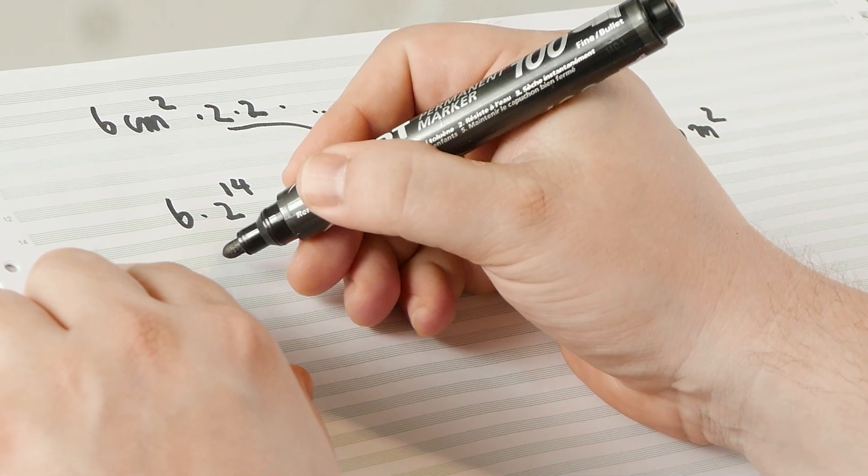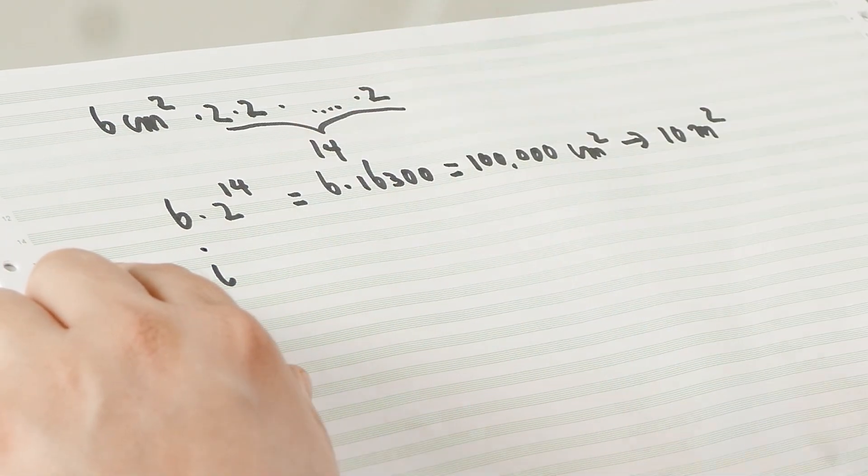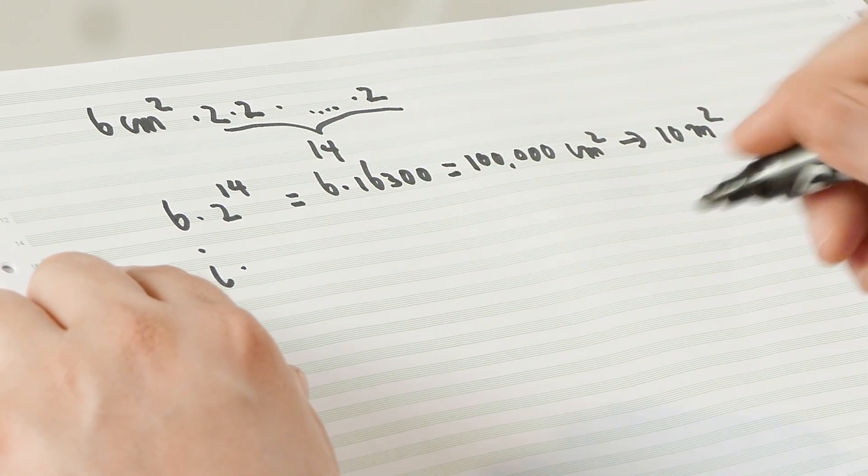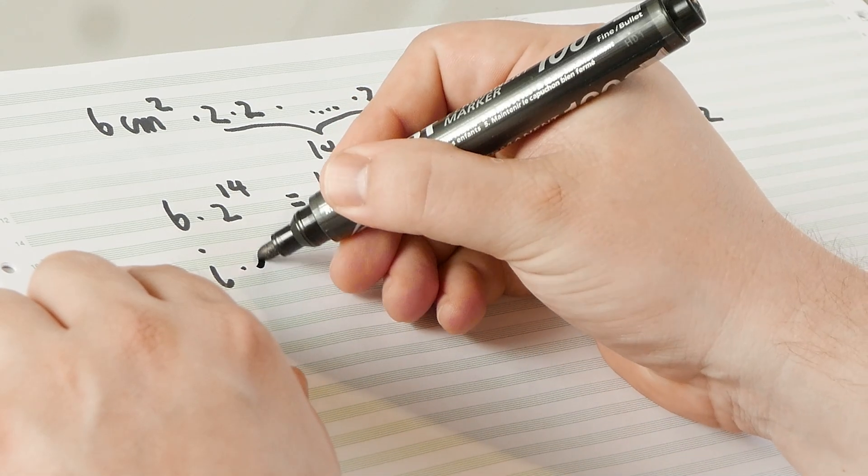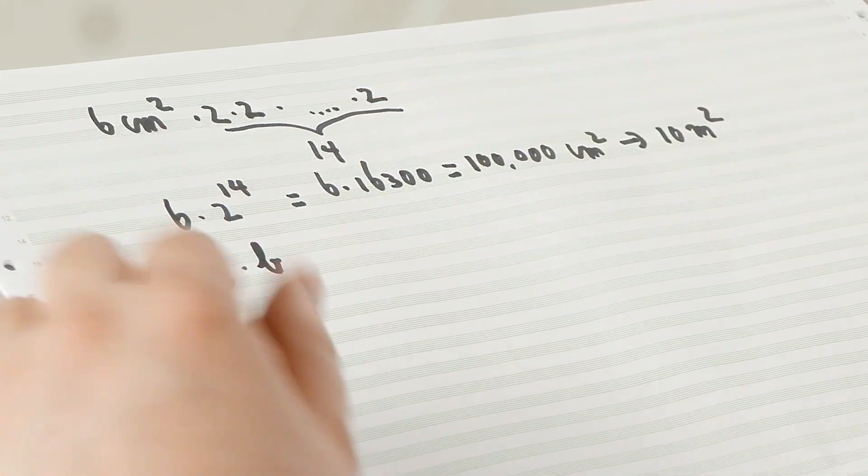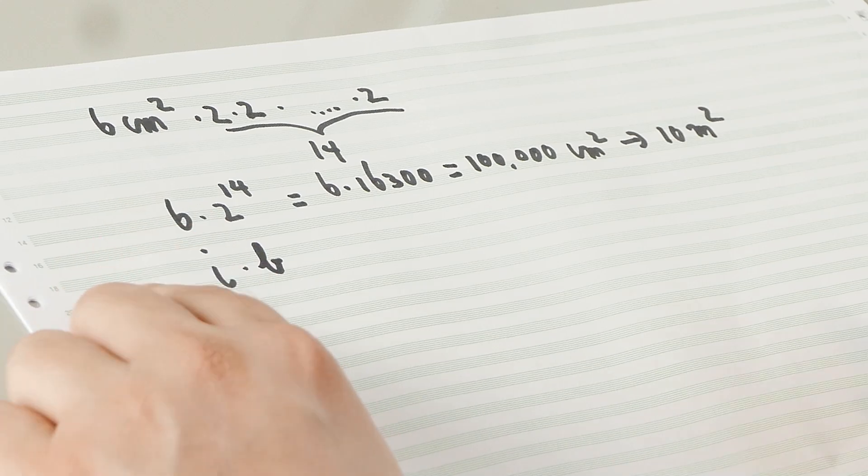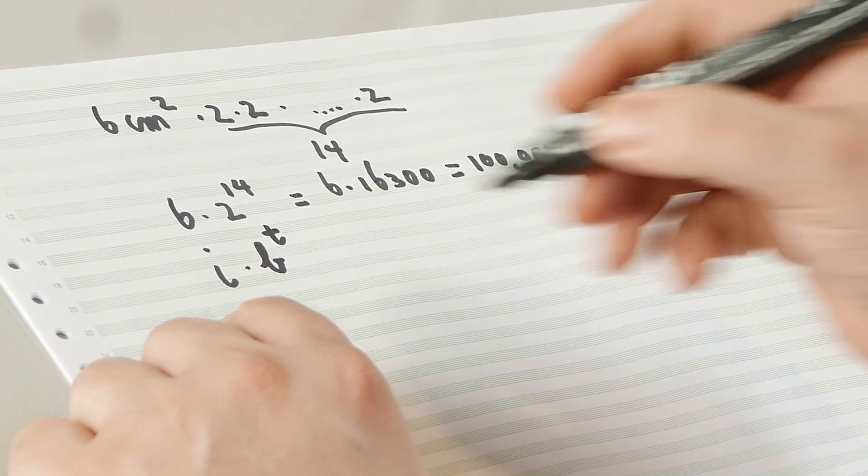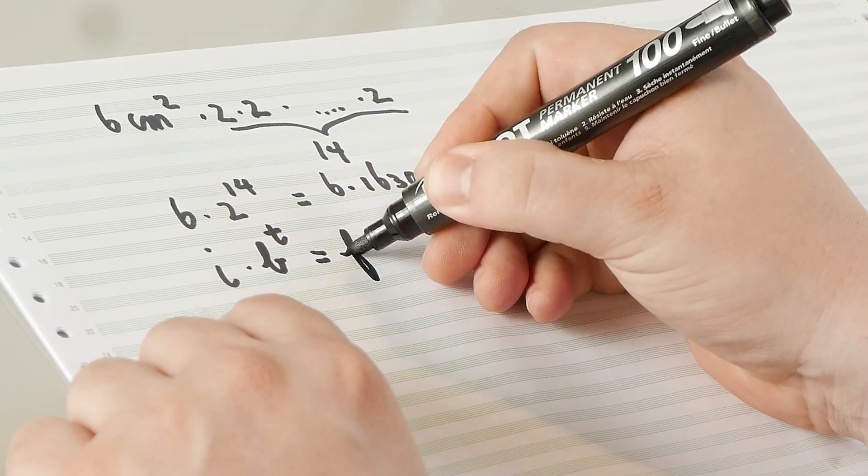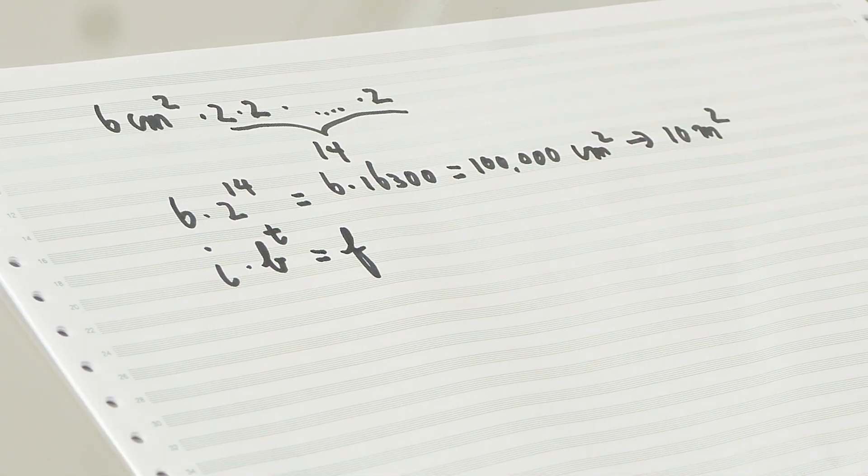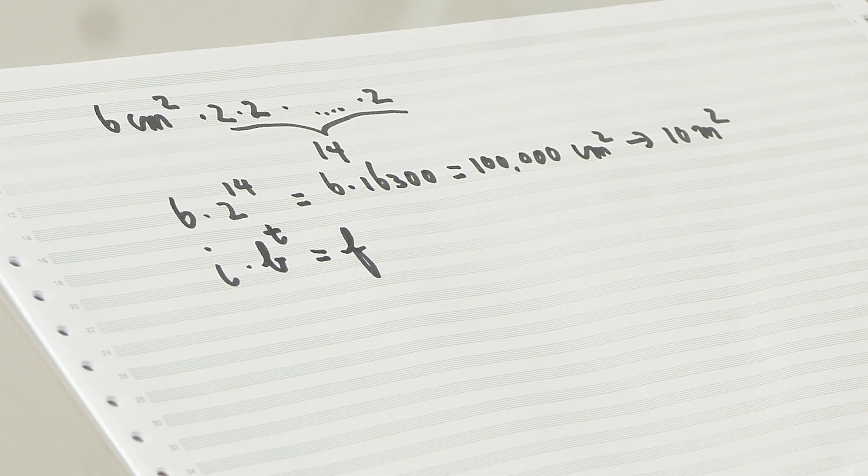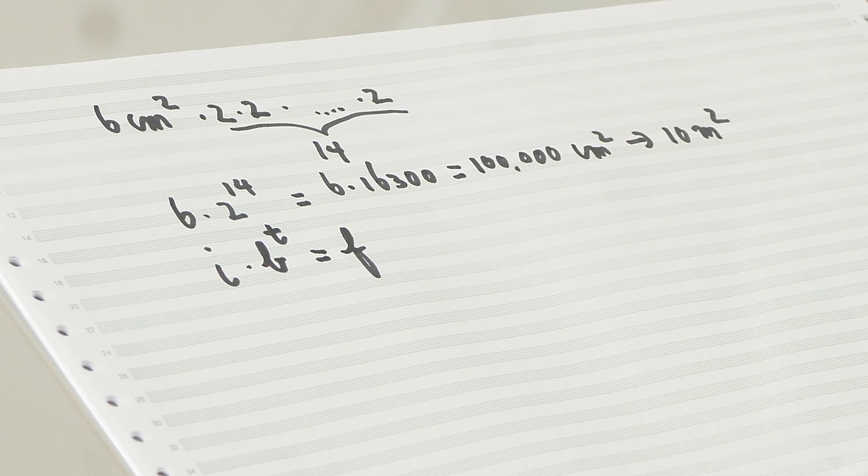Six was our initial value so we write that down with the letter I. Two we call our base. So in our case it was doubling every time period. So that's our base B. In our case two. The time period we denote with T. So that is 14 days. And then the result will be our final value. And this is how all exponential growth works. You have an initial value times the amount of change per time unit to the power time units is equal to our final value.